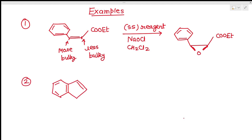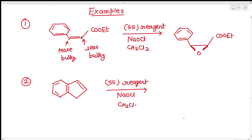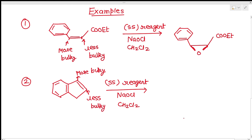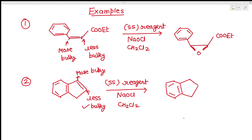See the second example. Suppose we have given this alkene and we are using SS Jacobsen reagent with NaOCl in CH₂Cl₂. This will be the more bulky carbon atom and this is the less bulky carbon atom. So we have to determine the stereochemistry at the less bulky carbon atom, which should have R stereochemistry. So you have to make the epoxide ring such that you are getting R stereochemistry — so if you are making the ring below the plane, then you are getting R configuration here.